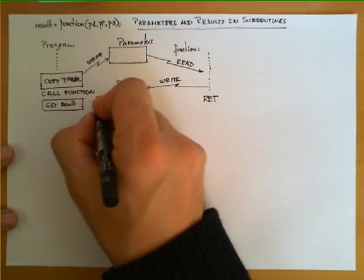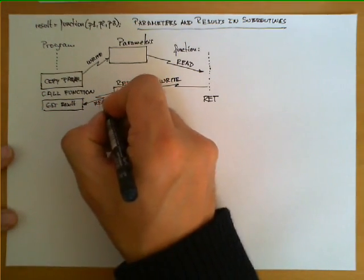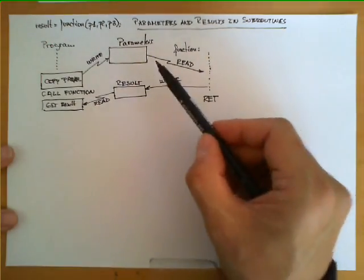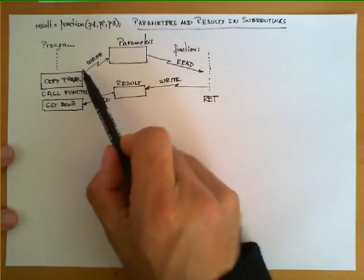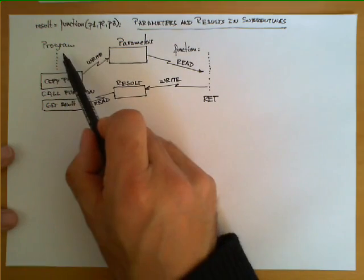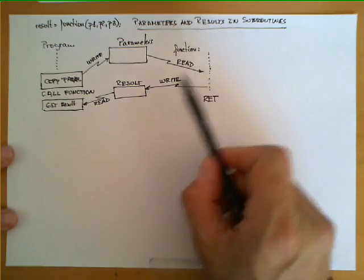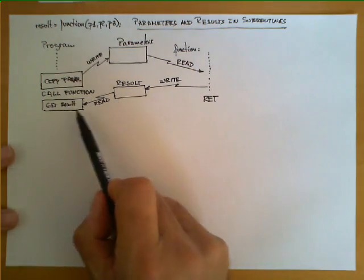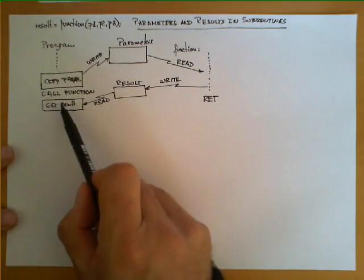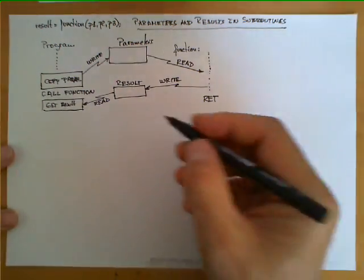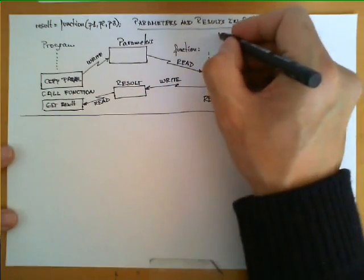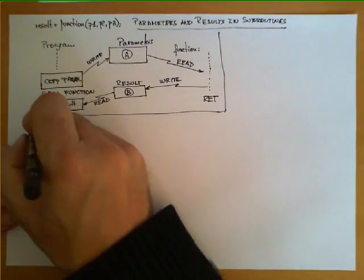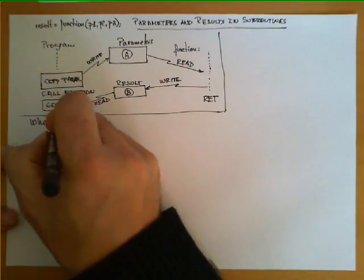These instructions will perform a read operation over that area. So this is what we are trying to implement: a mechanism that allows us to create an area where parameters will be written by the invoking program and read by the invoked subroutine, and another area that is written by the invoked subroutine to deposit the result, and read by the invoking program to obtain that result. The question is, for these two areas — area A and area B — where would you put them?